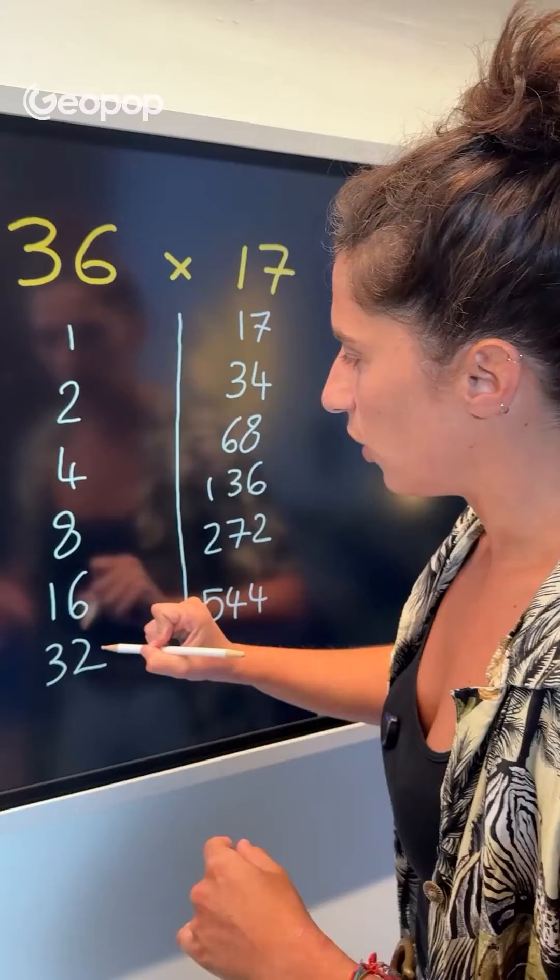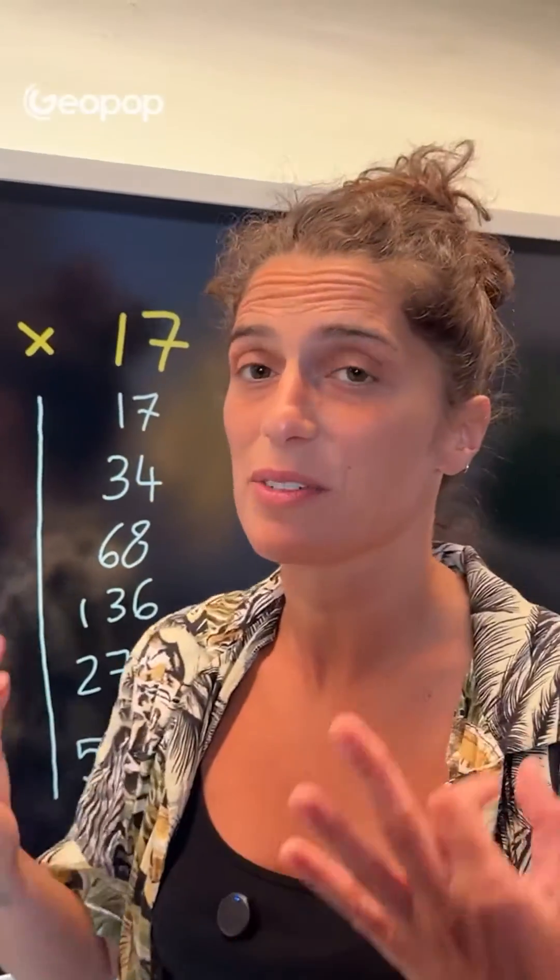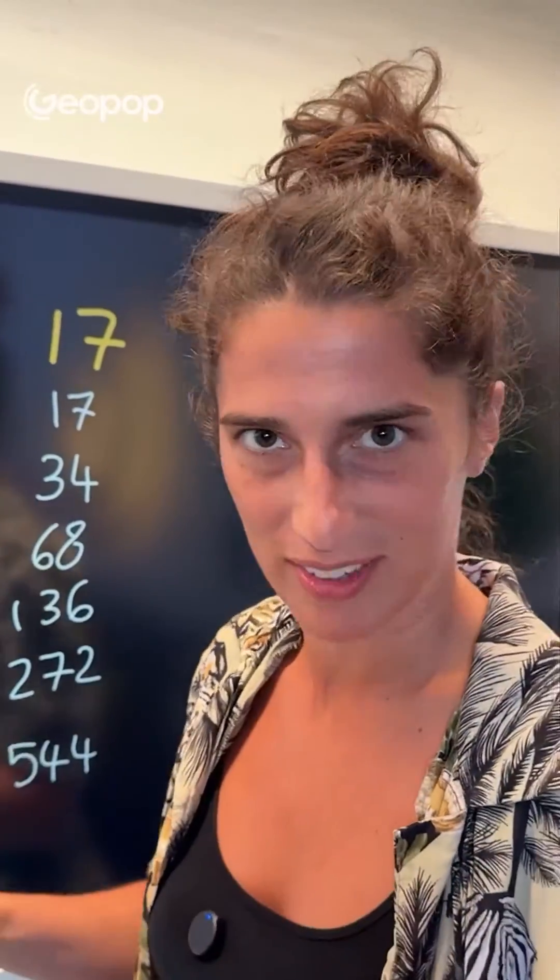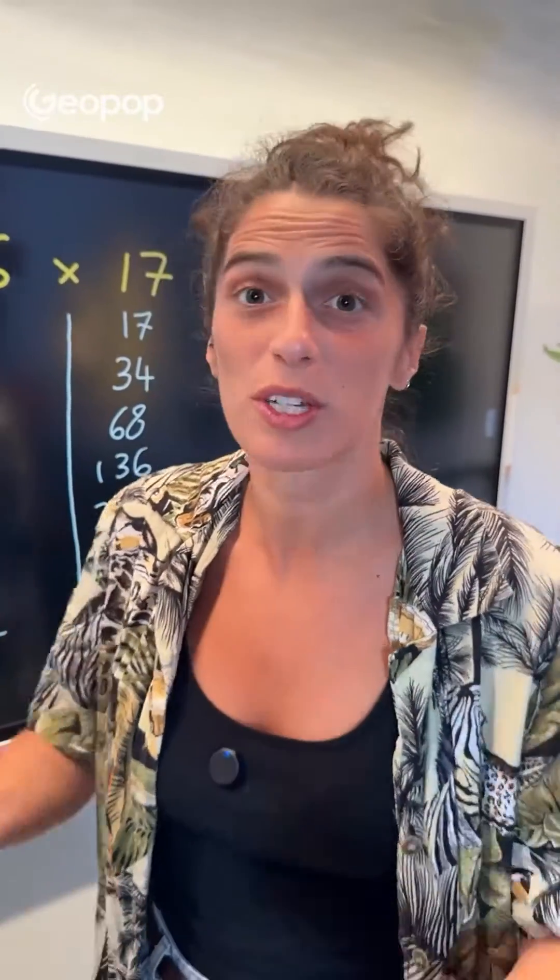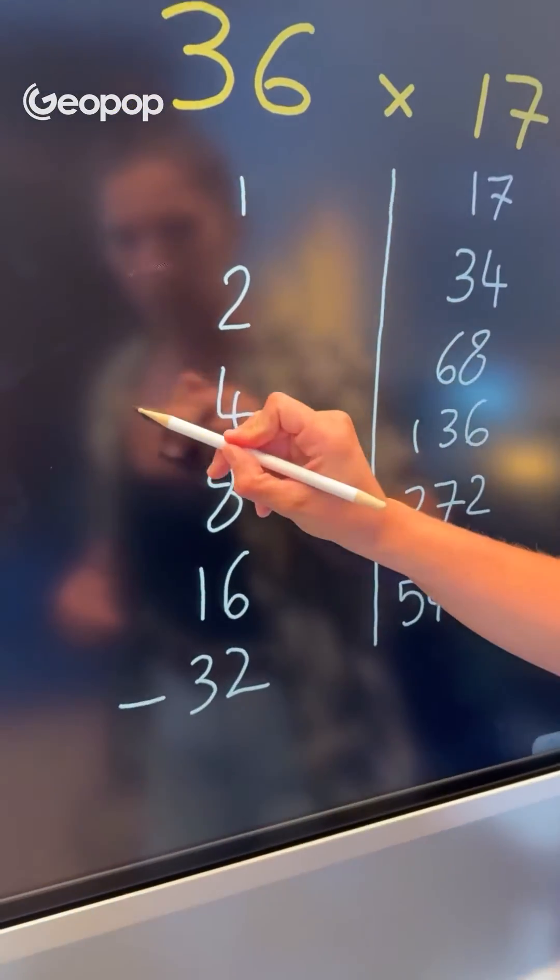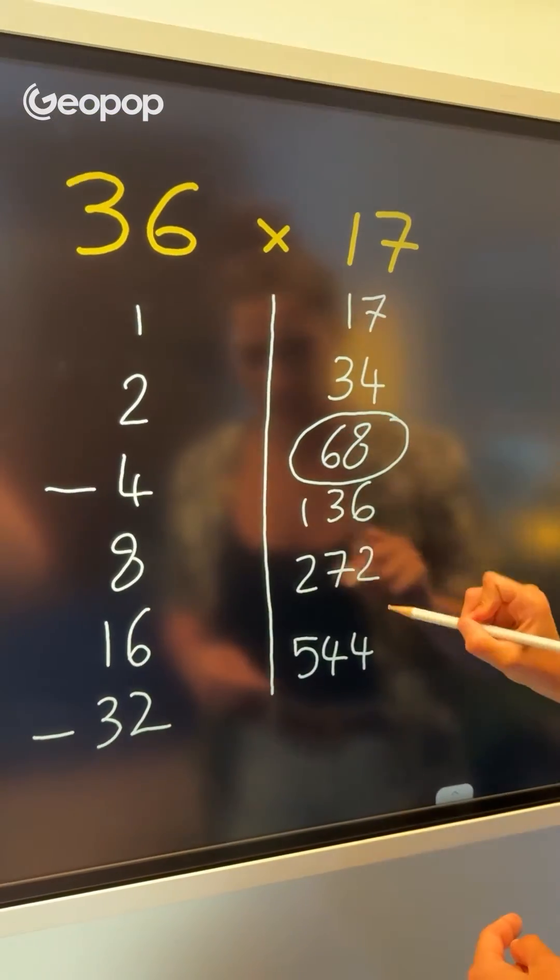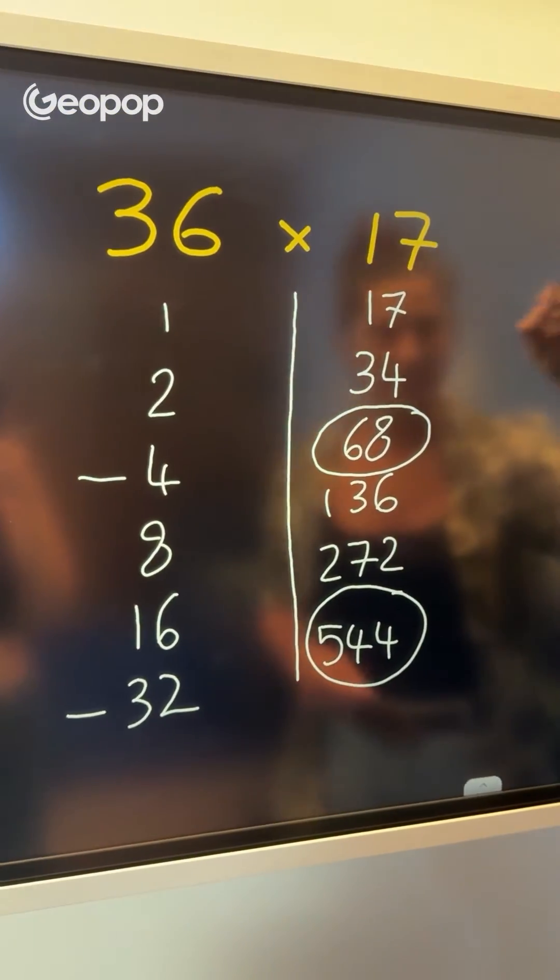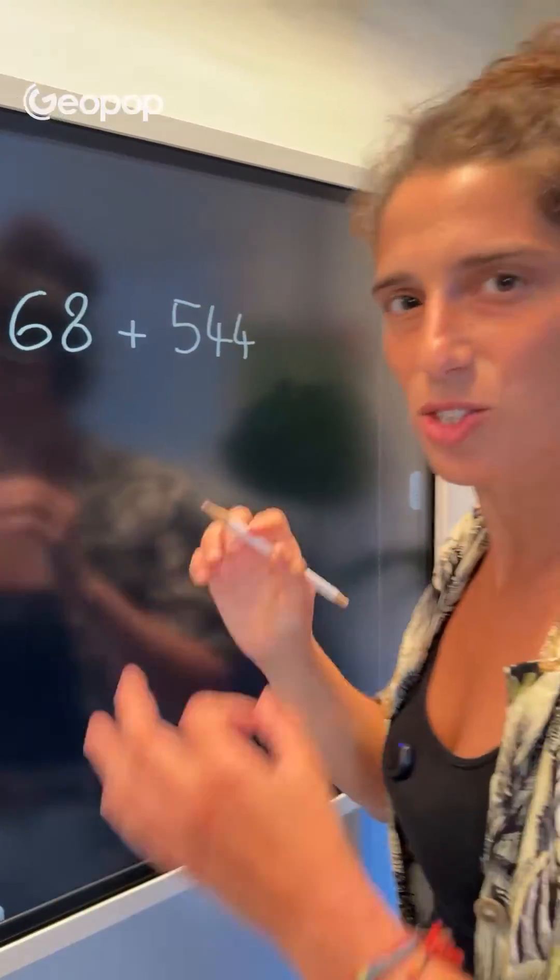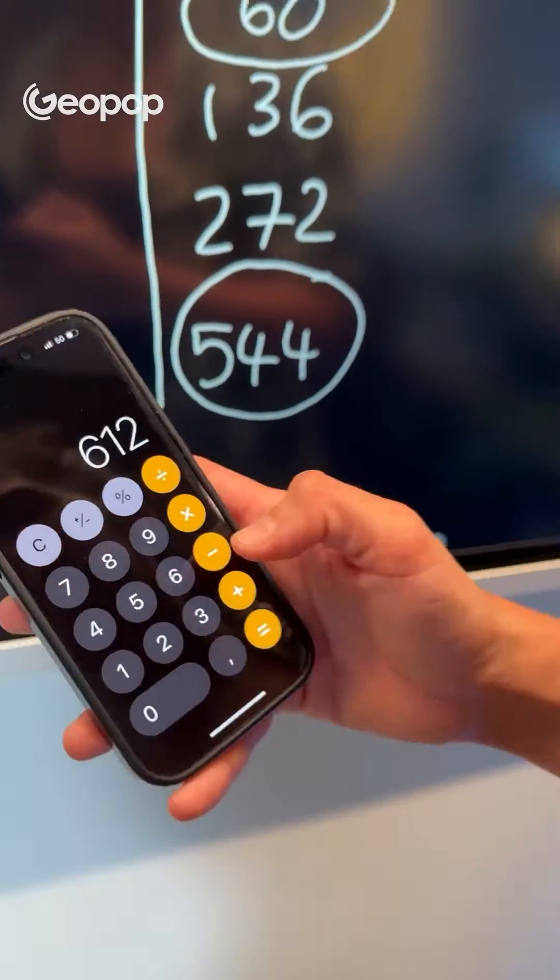At this point, I identify the specific powers of 2 that, when added together, make 36. What we've got here is precisely the binary representation of the number 36. In fact, every integer or whole number can be written as the sum of powers of 2. In this case, it's 32 and 4. I then go to the corresponding numbers in the column under 17, which are 68 and 544, and add them together. The answer I get is 612. Let's check if that's correct. 36 times 17 is exactly 612.